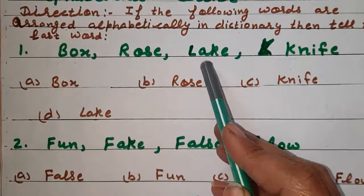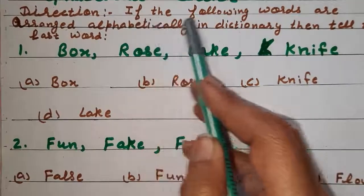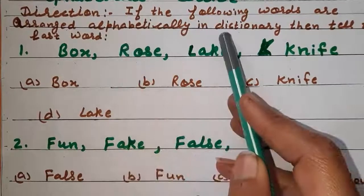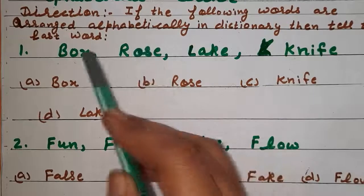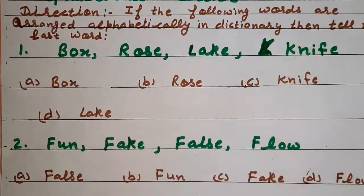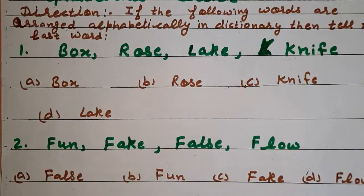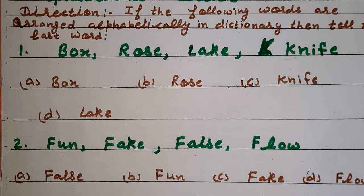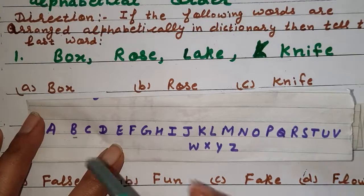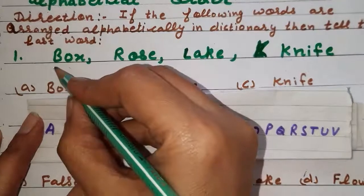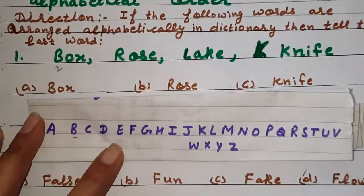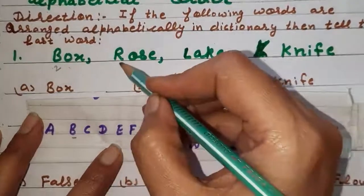Box, Rose, Lake, Knife. We have to arrange alphabetically in dictionary then tell the last word. Now B is given. B. It is second alphabet in alphabetical order. R.